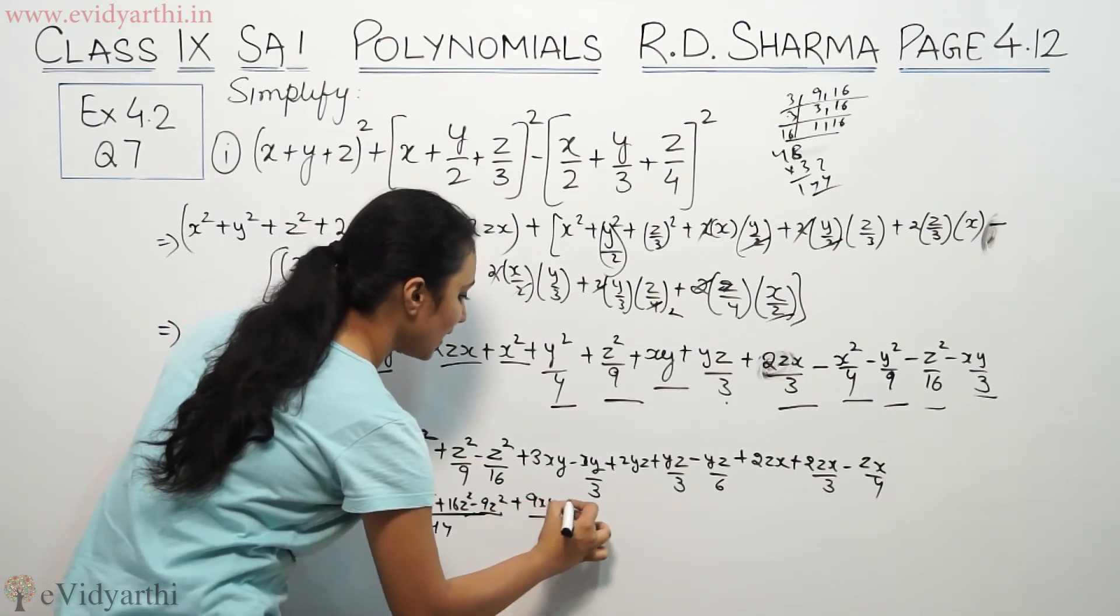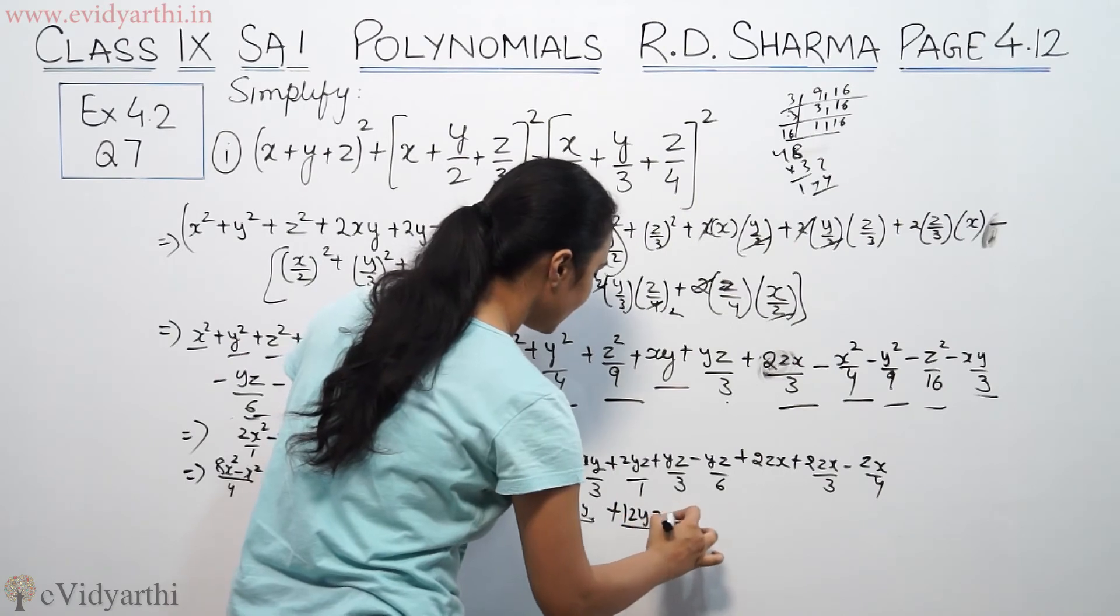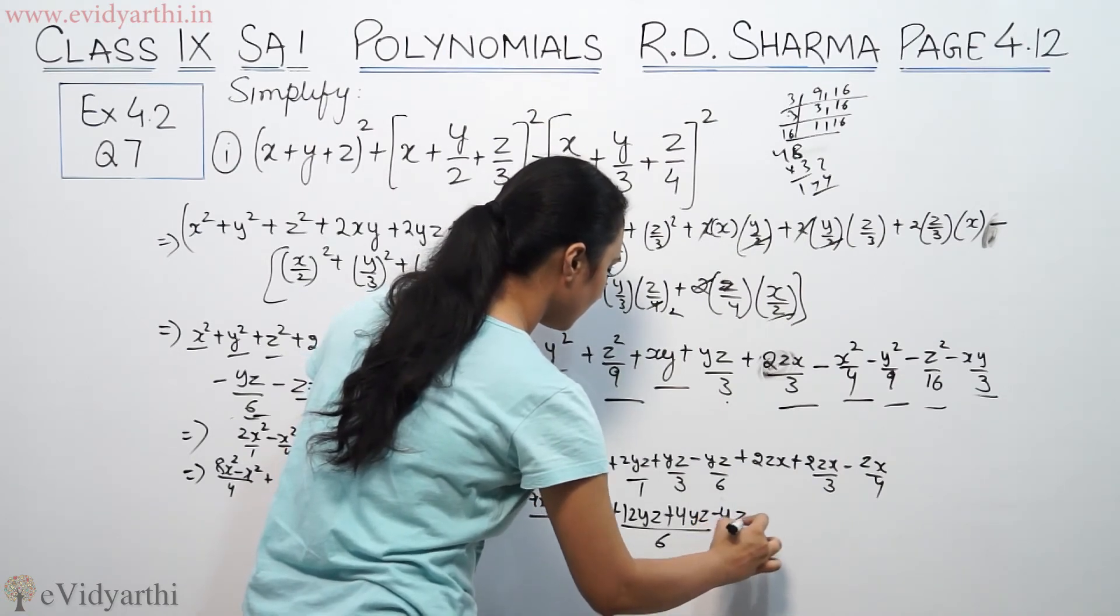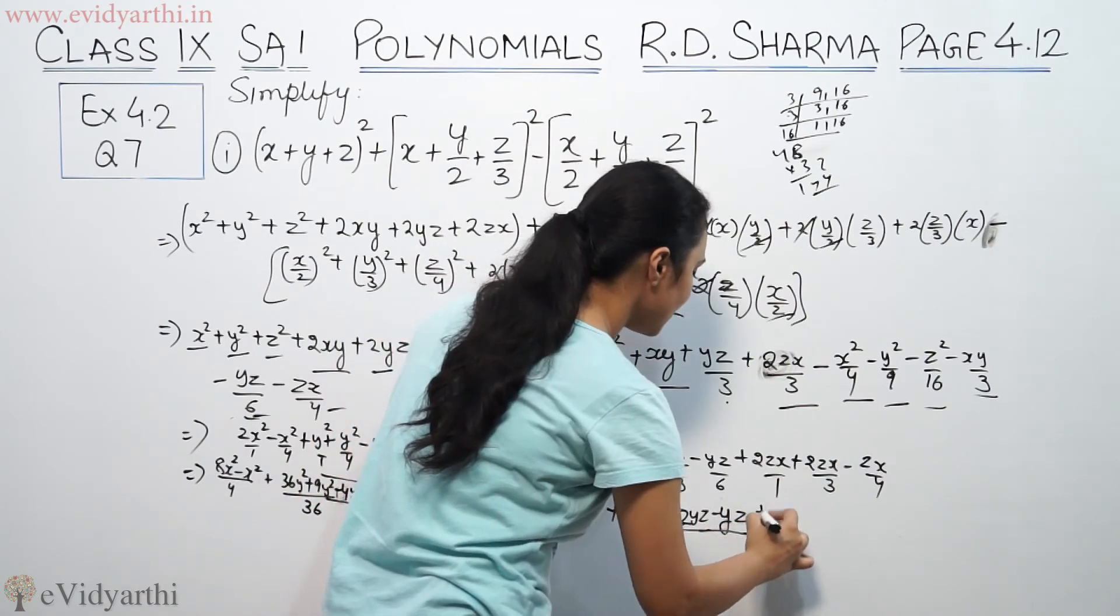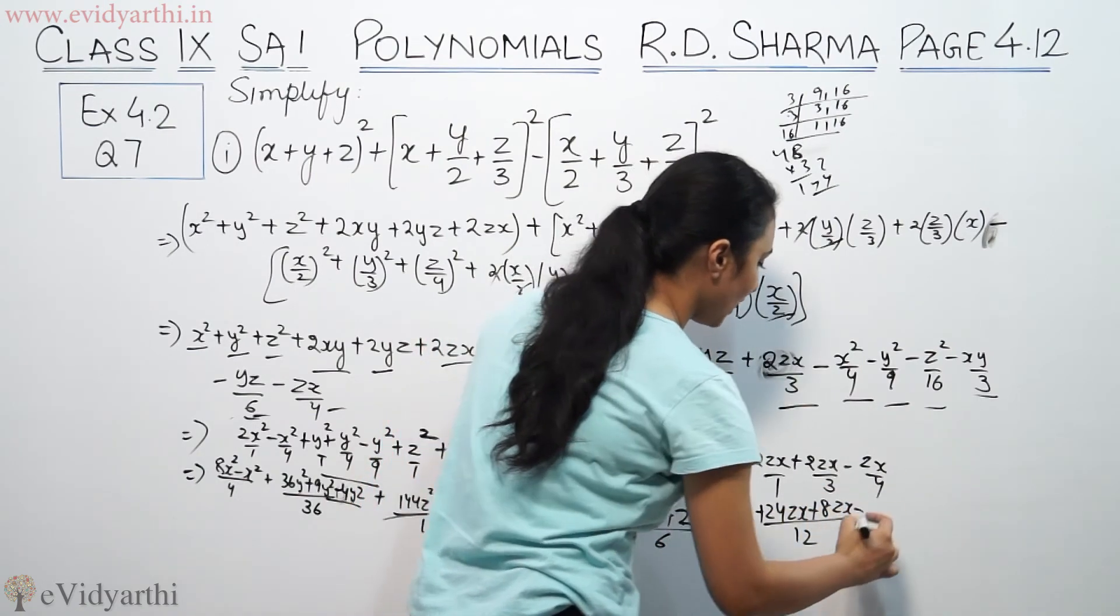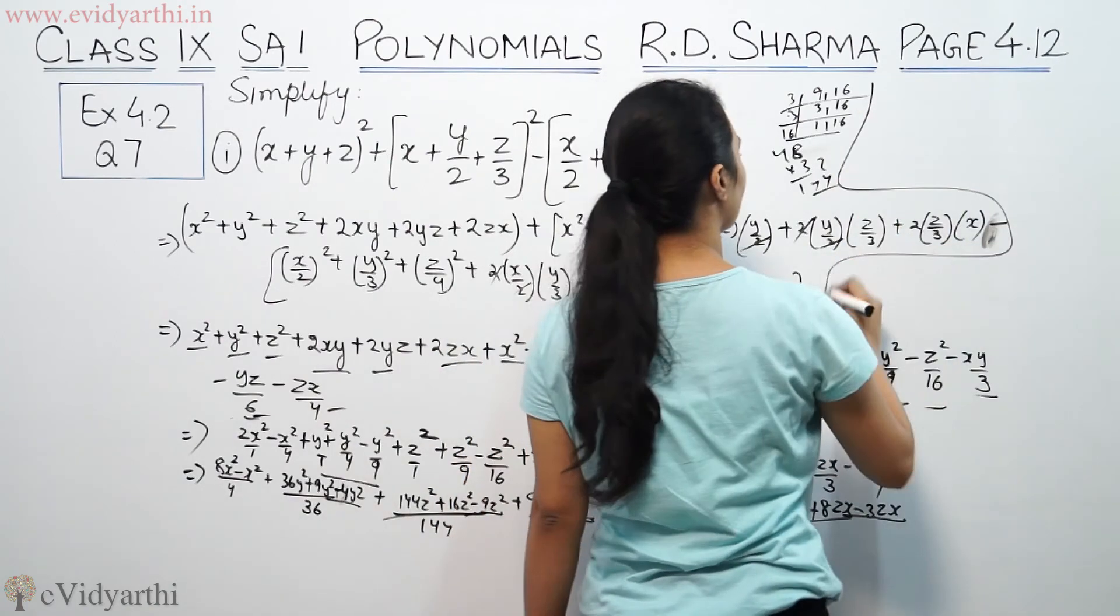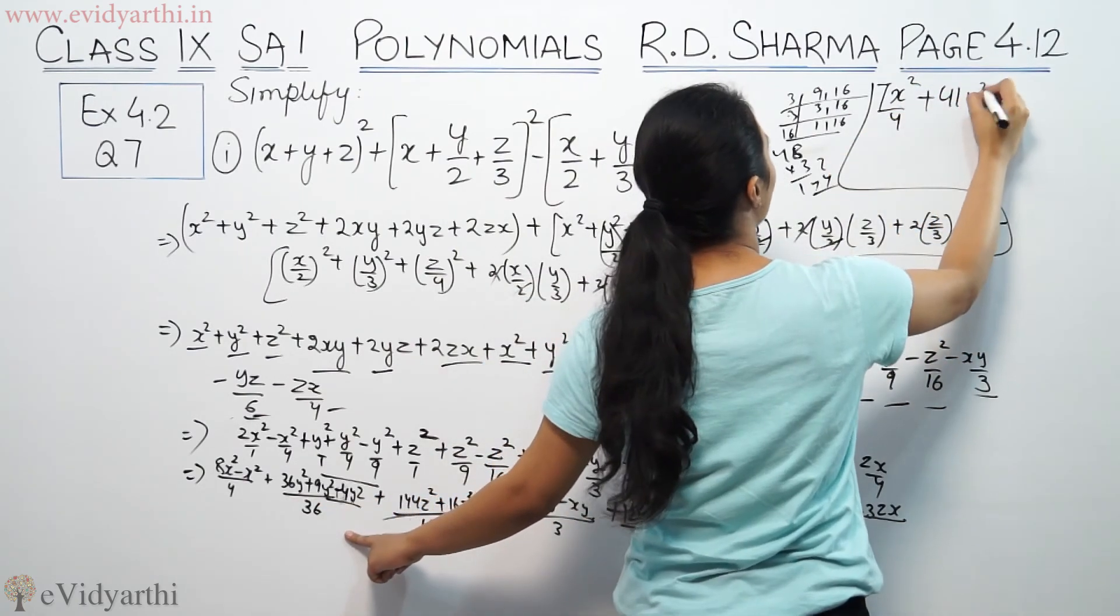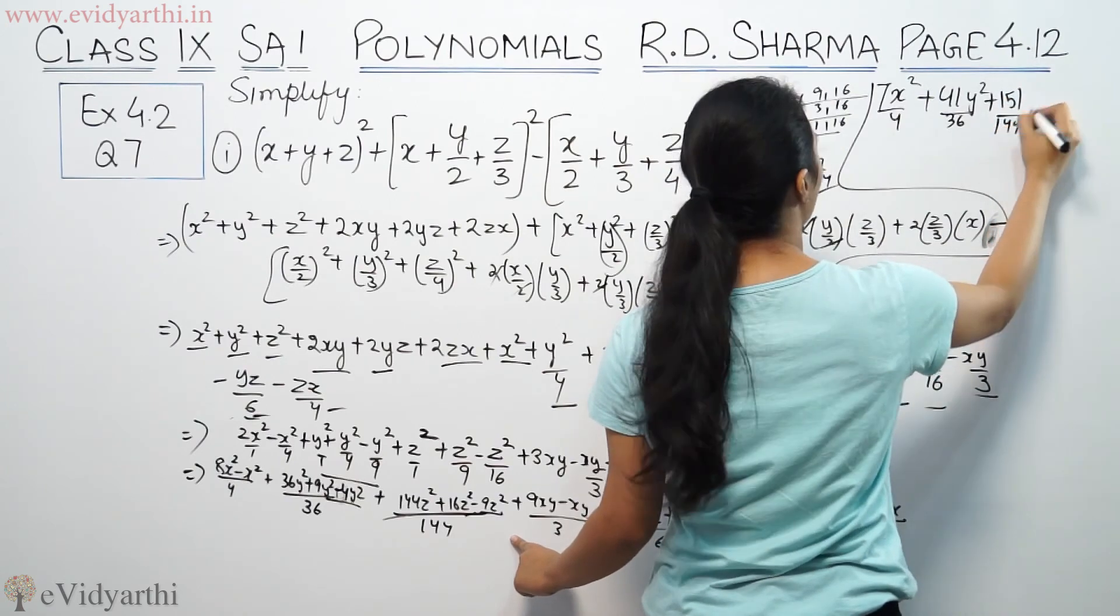This gives us (144z²+16z²-9z²)/144=151z²/144. For xy terms: 9xy-xy=8xy/3.